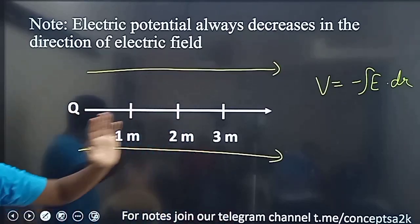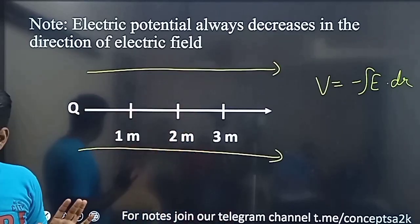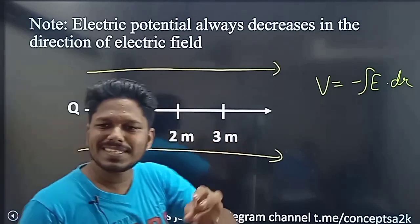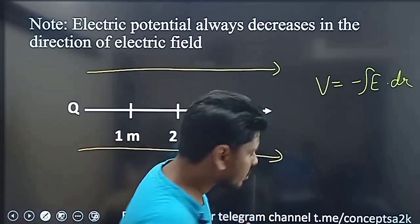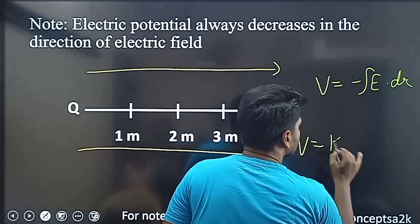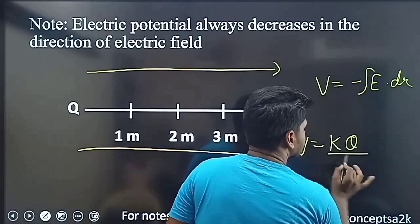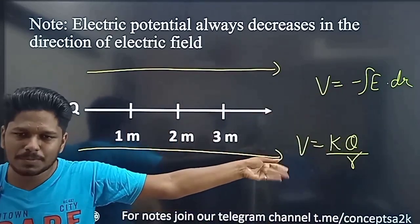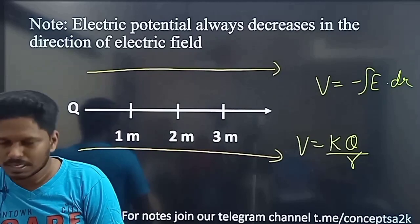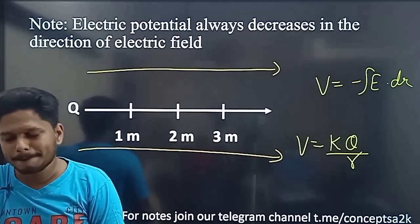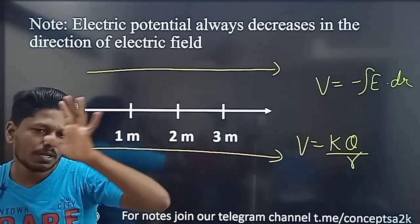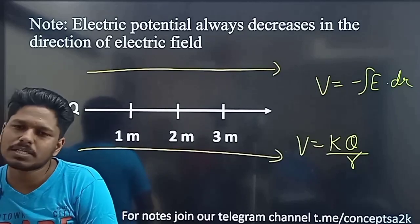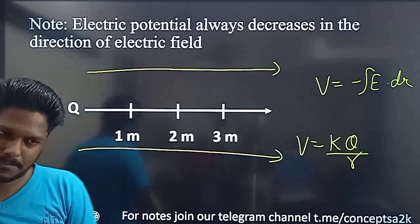There is a charge Q, then electric field is in the direction of electric field. What is the distance? It increases. The potential formula V is equal to... Then what happens as distance increases? What is the potential? If you go in the direction of electric field, the potential decreases.